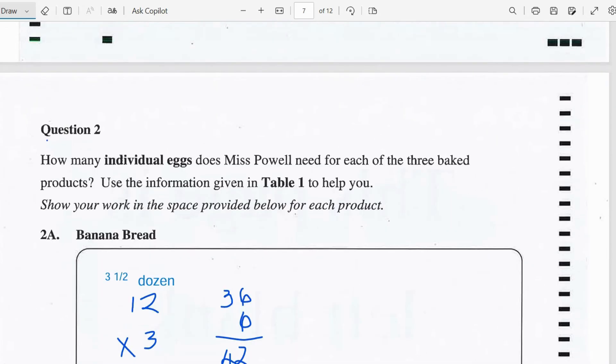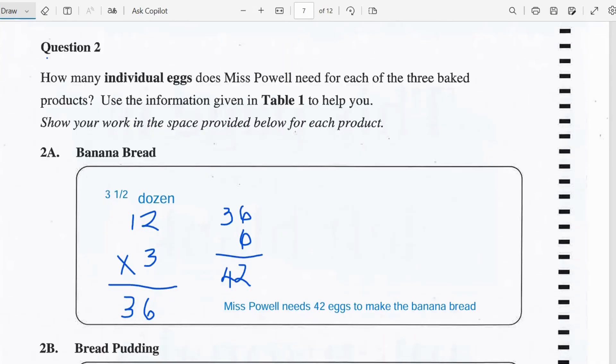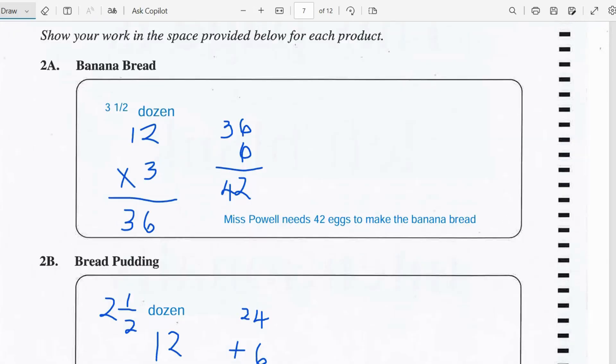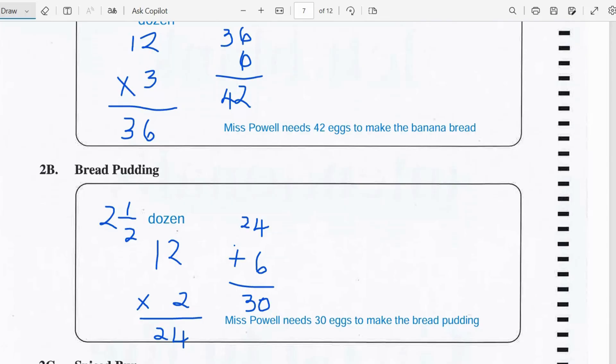Question 2 says we should find out how many individual eggs does Miss Powell need for each of the 3 baked products. For the banana bread she needs 3 and a half dozen eggs, so therefore we can multiply 3 times 12, because 12 is a dozen, so we multiply 3 times 12 to get 36. And then the half dozen is 6, so we'll add 6 to 36 and that gives us 42. So Miss Powell needs 42 eggs to make the banana bread.